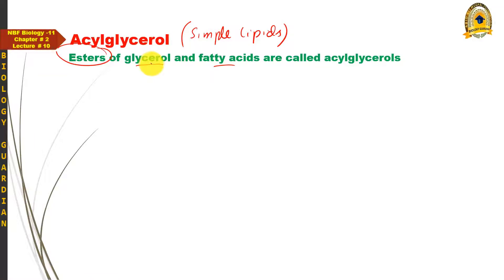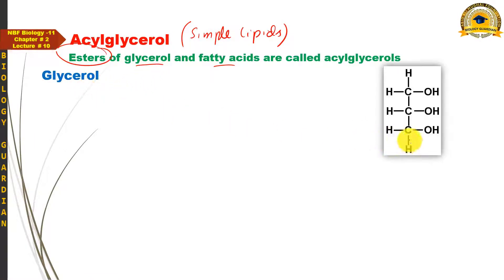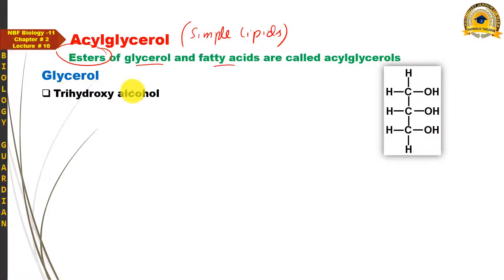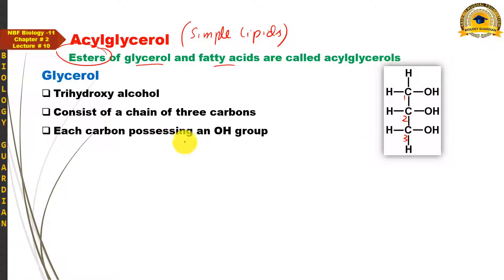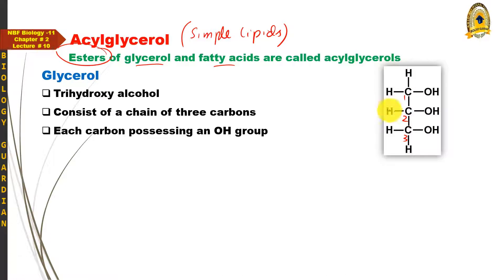Glycerol ایک ایسا alcohol ہے جس میں تین OH groups ہیں، یعنی یہ ایک tri-hydroxy alcohol ہے۔ It consists of a chain of three carbons، اور ان تینوں carbons کے اوپر each carbon possesses an OH group نظر آتا ہے۔ باقی carbons کی valency hydrogen atoms سے justify کی جاتی ہے۔ اس طرح سے جو structure بنتا ہے اسے glycerol کہتے ہیں۔